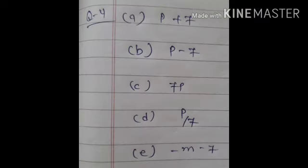Question number 4: give the expression for the following cases. First one: 7 added to P. 7 को P में add करना है, तो P plus 7. B: 7 subtracted from P. 7 को subtract करना है किस में से? P में से. So P minus 7. यहाँ पे अगर आप 7 minus P करोगे तो wrong होगा. जैसे मैं बोलूँ 2 minus करो, लेकिन किस number में से? 5 में से — तो 5 minus 2. उसी तरह 7 subtracted from P, so P minus 7.